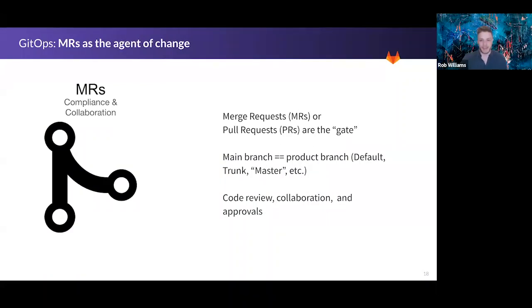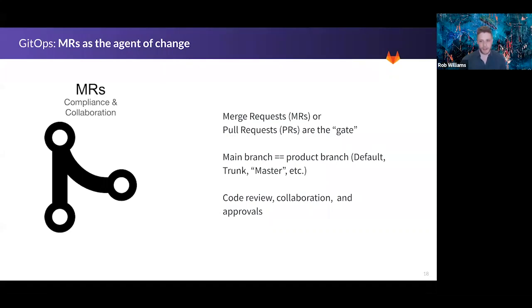Merge requests are the change agents for code updates. They allow you to merge branches to change the source of truth for any given environment — typically the master branch for production. Merge requests enable discussions and collaboration with your team directly on change lines relating to your infrastructure configuration and policies. They act as a gate on the change — enabling a small number of people to enact changes while promoting collaboration with a wider group.